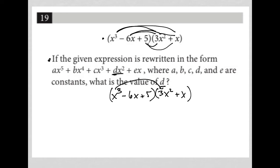So x cubed times 3x squared is 3x to the fifth. x cubed times x is plus x to the fourth. Negative 6x times 3x squared is negative 18x to the third.